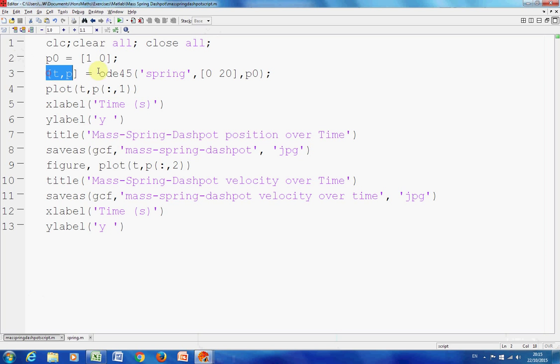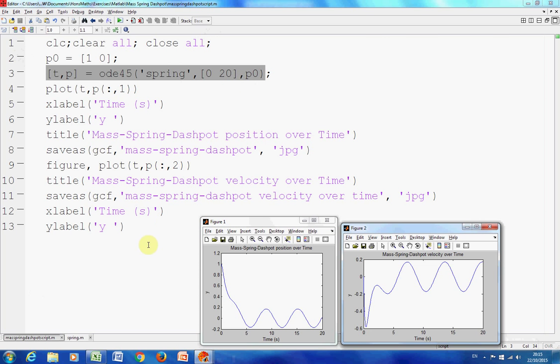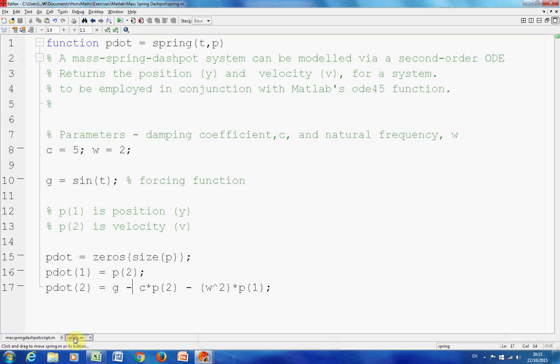Here we're calling ODE45, calling the function with a time span of 0 to 20 using the initial conditions. Let's have a look here. There we have the function spring. Down here on line 10 is the forcing function and line 8 are the values for C and W.